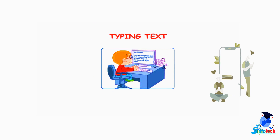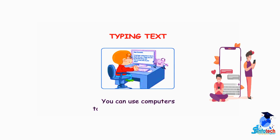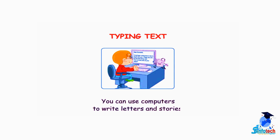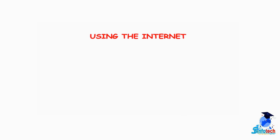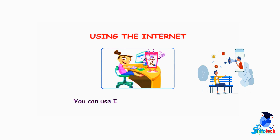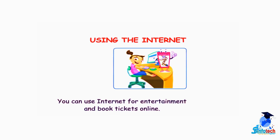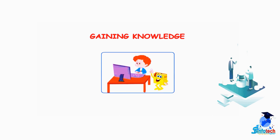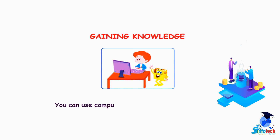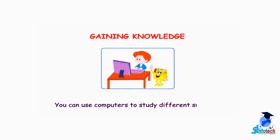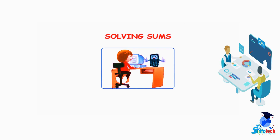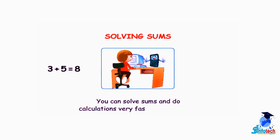Typing text: you can use computers to write letters and stories. Using the internet: you can use the internet for entertainment and book tickets online. Gaining knowledge: you can use computers to study different subjects. Solving sums: you can solve sums and do calculations very fast on a computer.